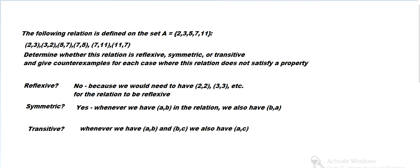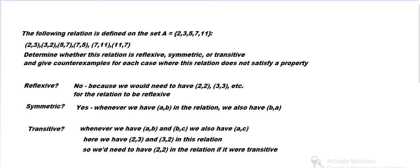So for this one, for example, we have (2,3) and (3,2). So the 2 is the first one, and 2 is the last one. So we have (a,b), (b,c). So we need to have (a,c), which is (2,2), the first and the last one. We need to have that if it were transitive, but we don't have that. So it's not transitive.